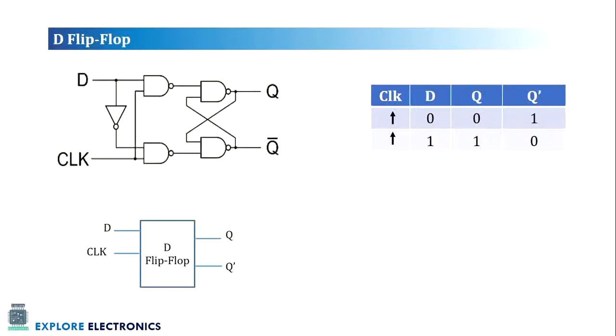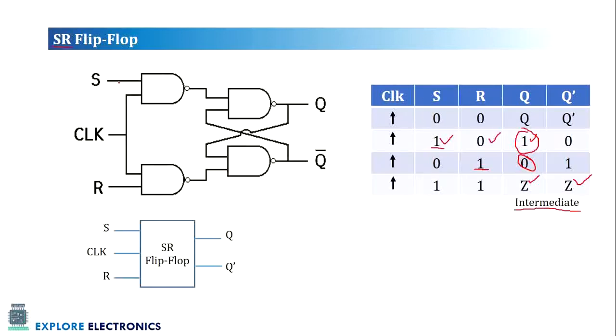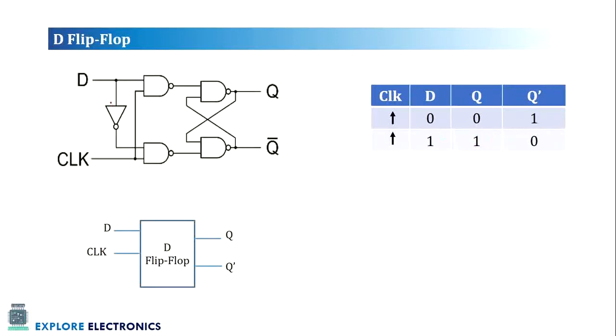Now let us see D flip-flop. The circuit of the D flip-flop is just the modification of SR flip-flop. You can observe the previous circuit. S is given to this particular gate and R input is given to the second gate. Here in the D flip-flop, to convert this SR flip-flop into D flip-flop, we just treat the two inputs as one and the other input for the gate will be an inverted input. So the same SR flip-flop circuit can be converted into D flip-flop like this.